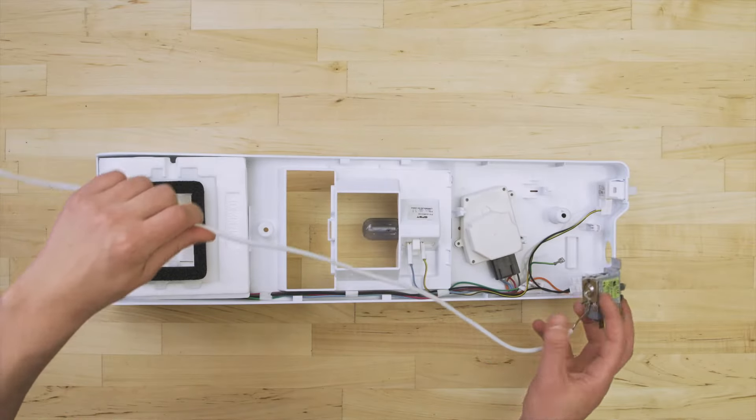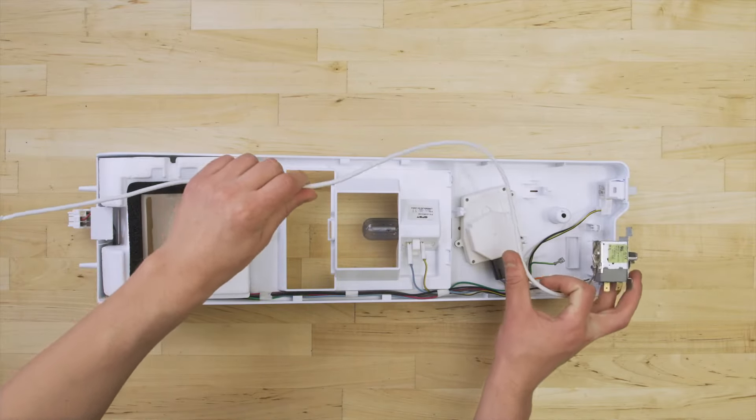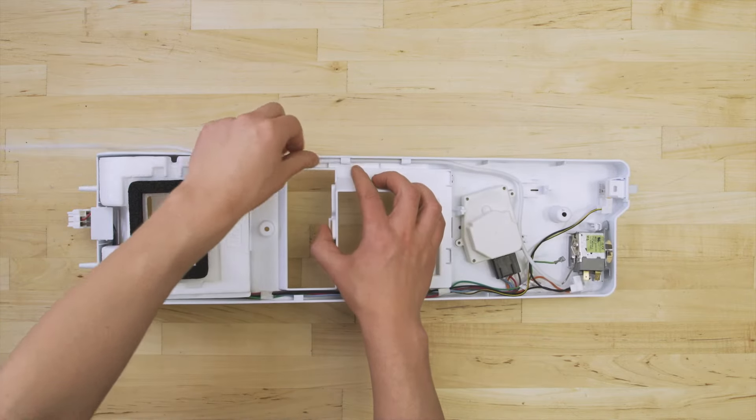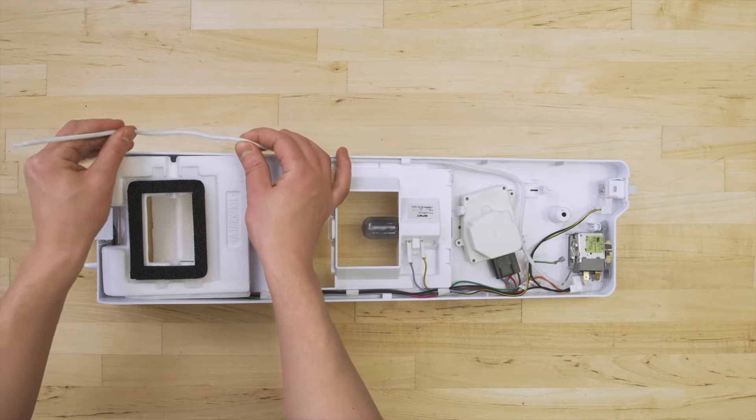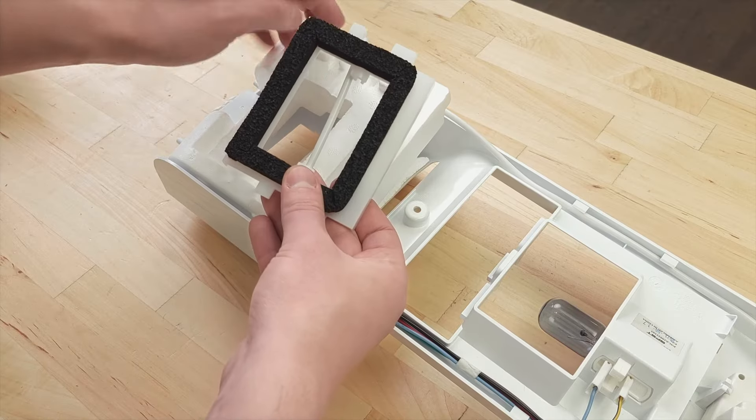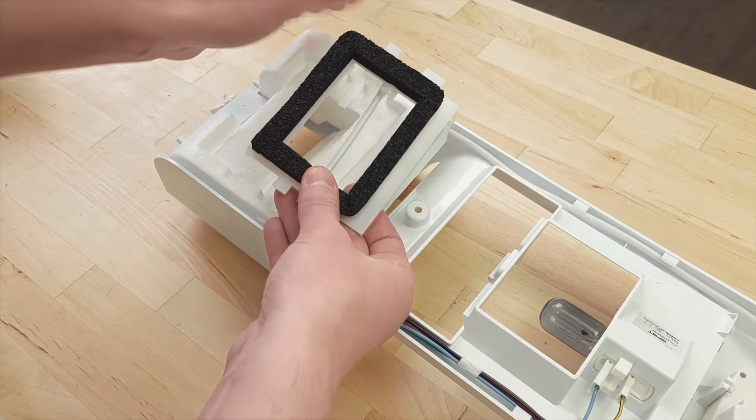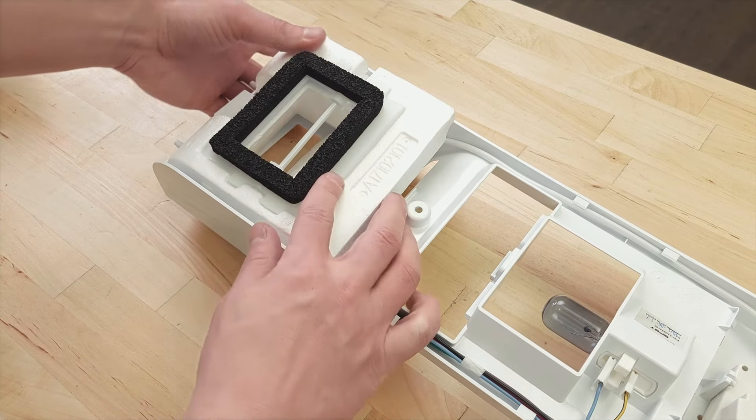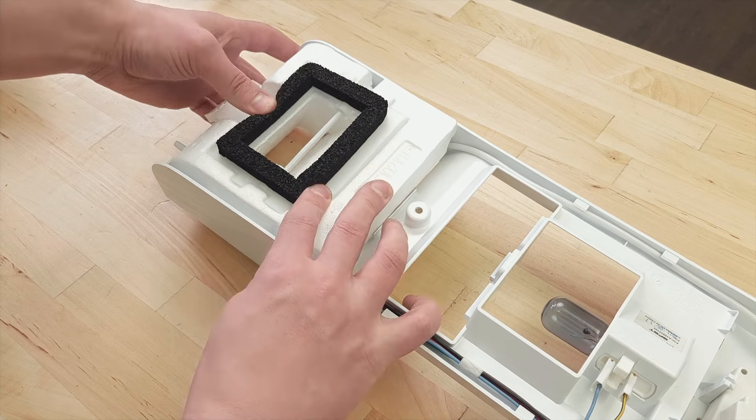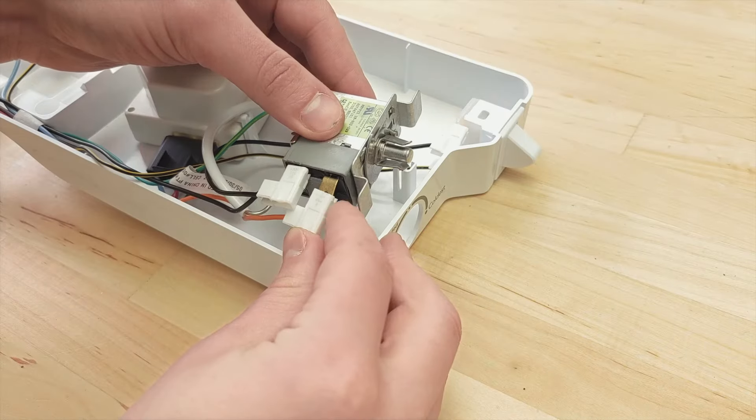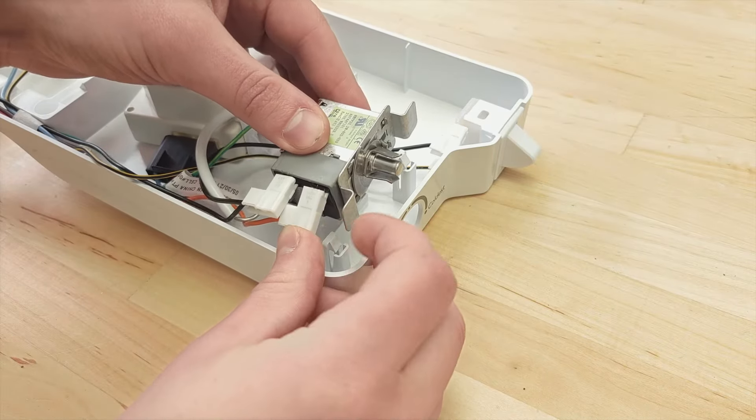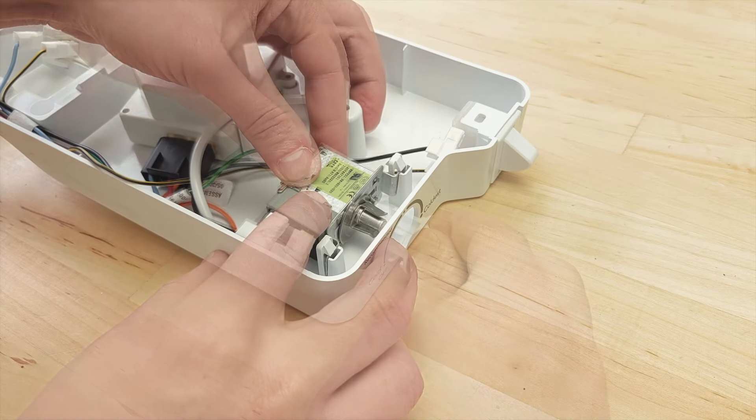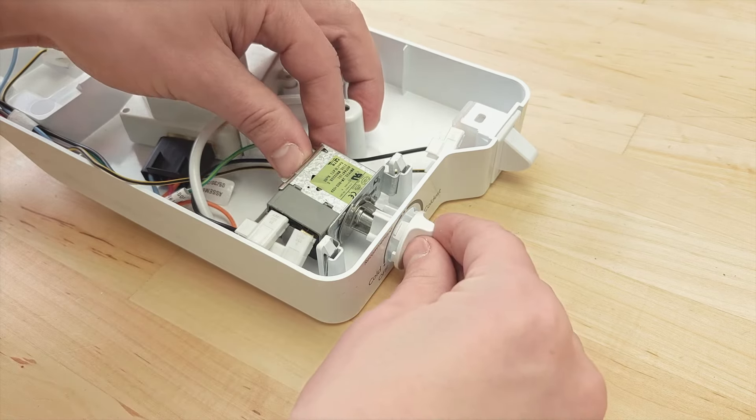Take the new thermostat and align it into the housing. Now push the sensing bulb into the mount. Next, reconnect the wires. Now push the dial back into place.